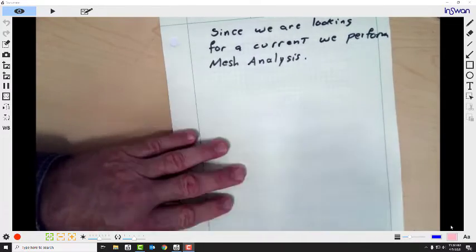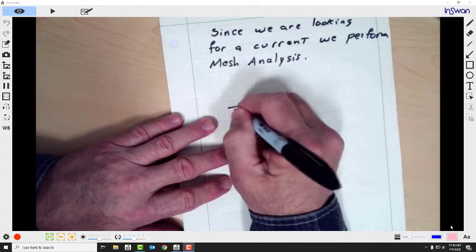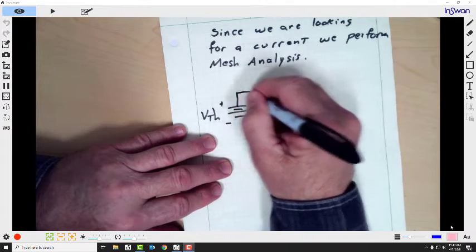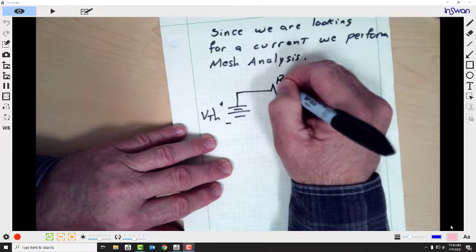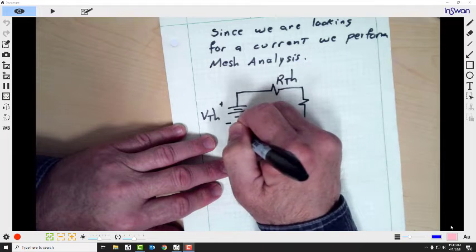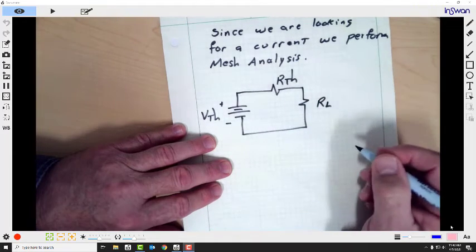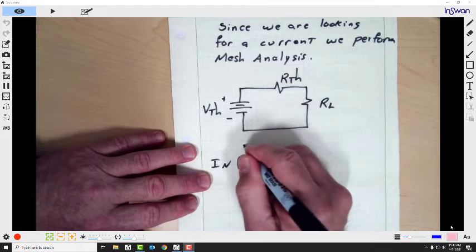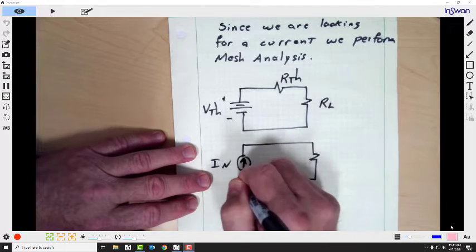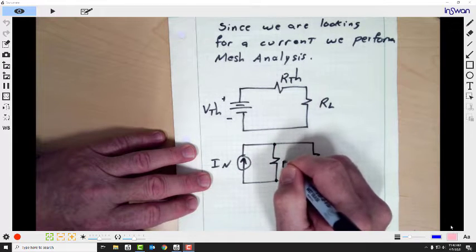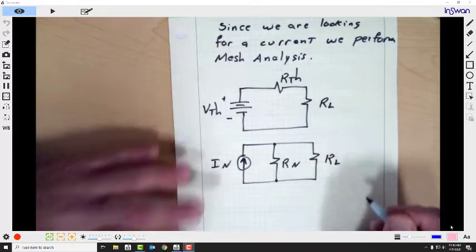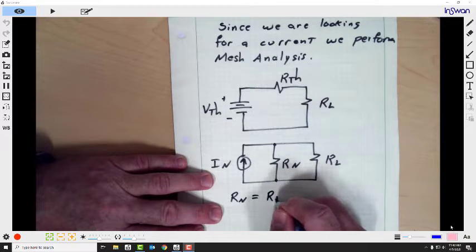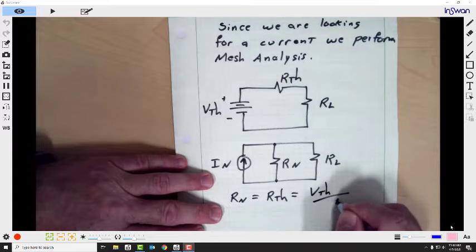And so what are we looking for when we have a Thevenin circuit? Well, I would expect to see an answer with a Thevenin voltage in series with a Thevenin resistor in series with the load resistor. Whatever it is. Then in the Norton circuit I would expect to see a Norton current in parallel with the Norton resistance and the load resistance. Realizing that R Norton equals R Thevenin, which is equal to V Thevenin over I Norton.